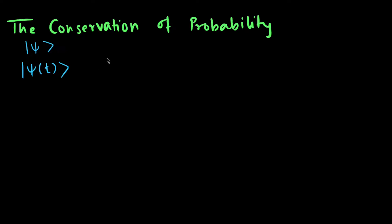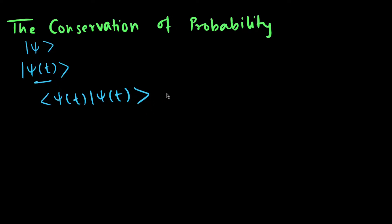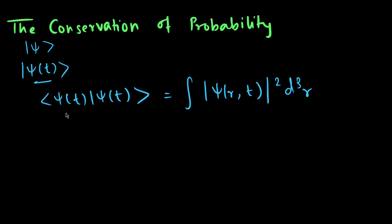Today we will discuss the conservation of probability. For a time-independent function ψ, we know that if we normalize it, it will stay normalized for any subsequent time. But what about a time-dependent function? We can show that the norm of ψ(t) is time-independent. The norm of ψ(t) is given by ⟨ψ(t)|ψ(t)⟩, which equals the integral of |ψ(t)|² d³r. This implies that if ψ(t) is normalized, it stays normalized for any subsequent time.